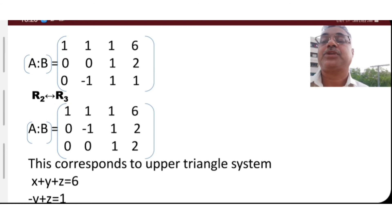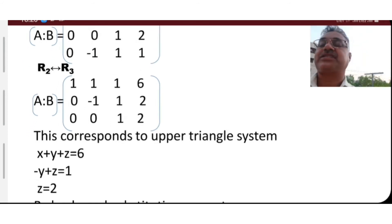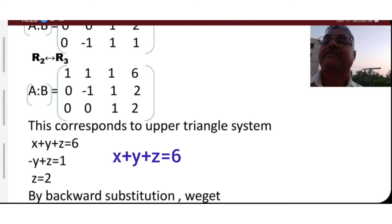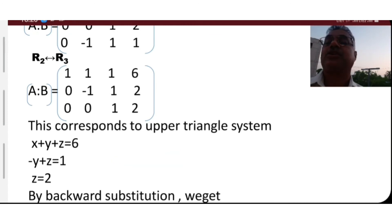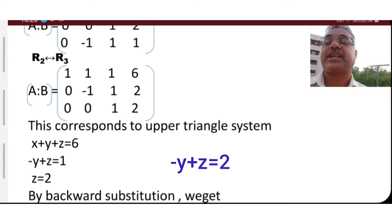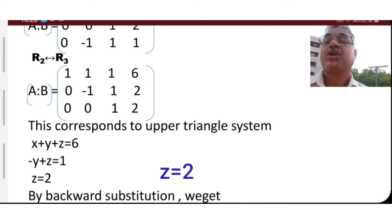From this augmented matrix we write the equations: from row 1, x plus y plus z is equal to 6; from row 2, with x-coefficient 0, y-coefficient -1, z-coefficient 1, we get minus y plus z is equal to 1; and from row 3, z-coefficient is 1 so z is equal to 2.